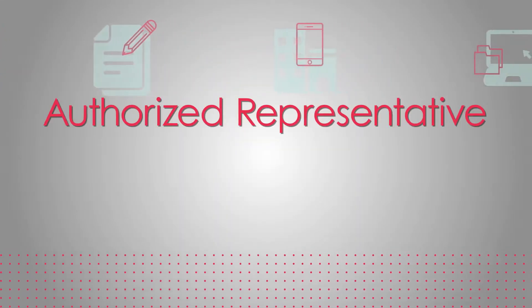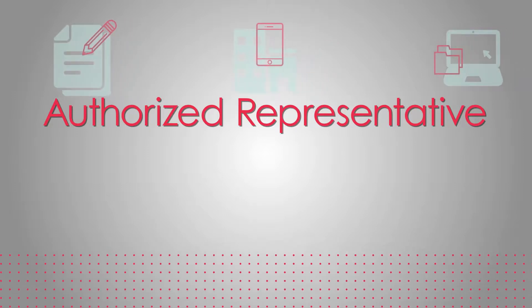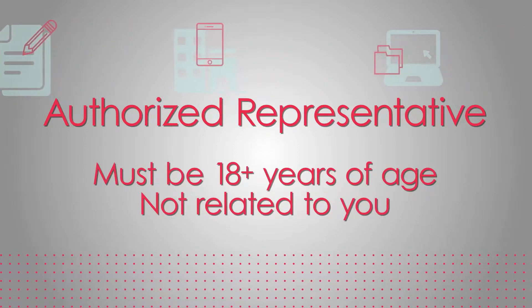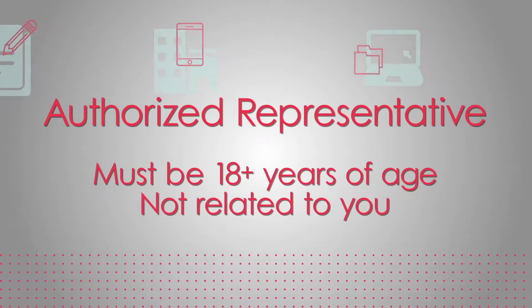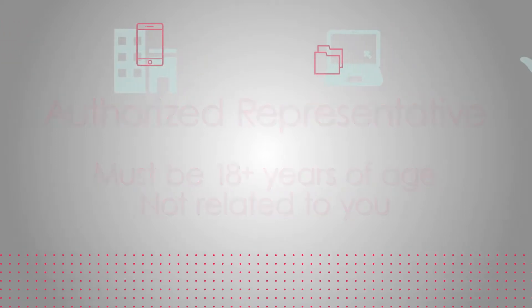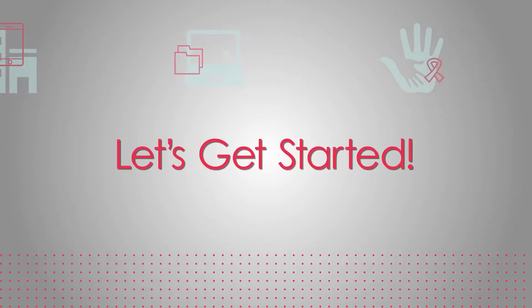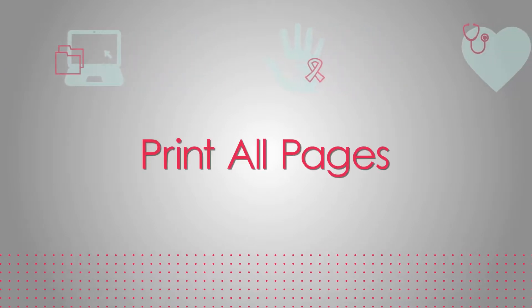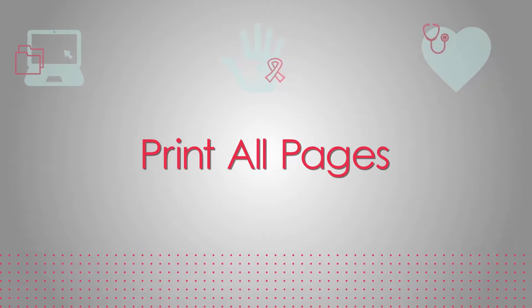You will need to identify someone who can act as our authorized representative. This person can be anyone of your choosing who is at least 18 years of age and not related to you. Now that you have your document or documents in hand, and you've decided who shall serve as your authorized representative, let's get started. Note that since you have been provided with a paper version of the Form I-9, you will need to print all pages and complete by hand.